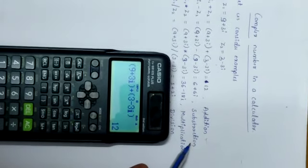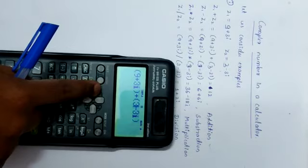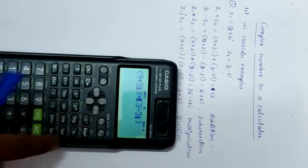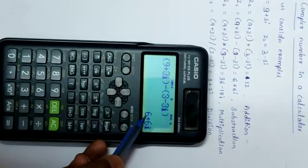Then we calculate subtraction of these two numbers. Replace plus by minus, and the subtraction answer is 6 plus 6i.